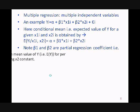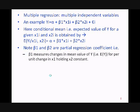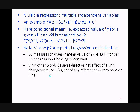What is the meaning of partial regression coefficient? Here β1 is the impact or changes in the mean value of y for per unit change in x1, holding x2 constant. In other words, β1 gives the direct or net effect of a unit change in x1 on E(Y), net of any effect that x2 may have on E(Y).